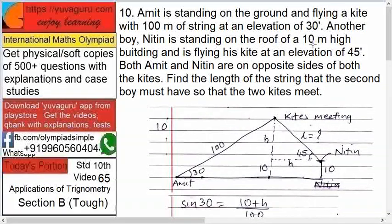Both Amit and Nitin are on opposite sides of both the kites. Find the length of the string that the second boy must have so that the two kites meet.